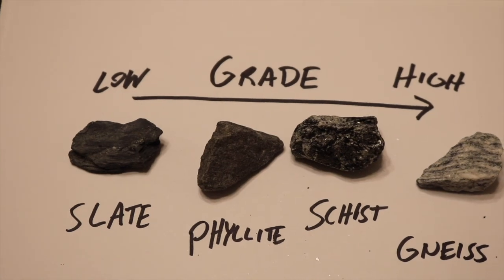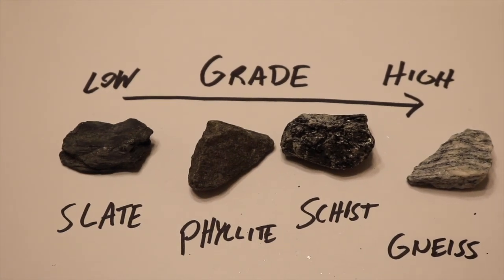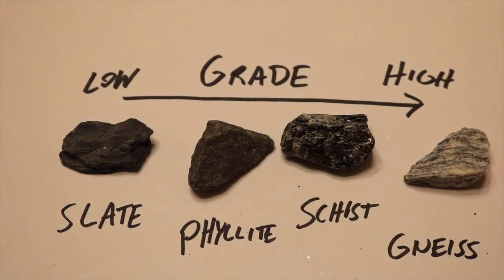All of these rocks right here could have formed from the same protolith. A good example of gneiss's protolith, its sedimentary protolith, could be mudstone or shale, or gneiss could have been formed from an igneous protolith, like granite.